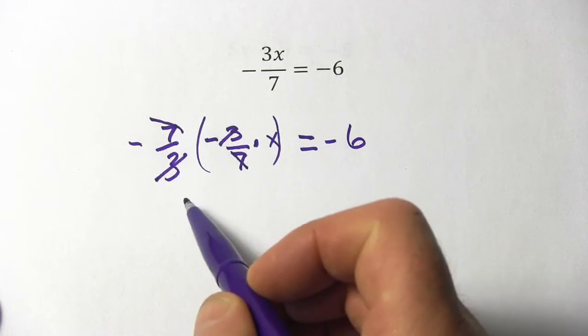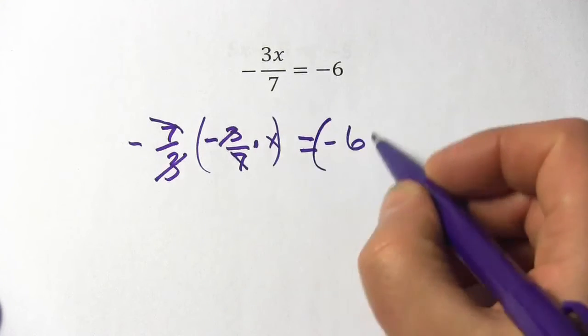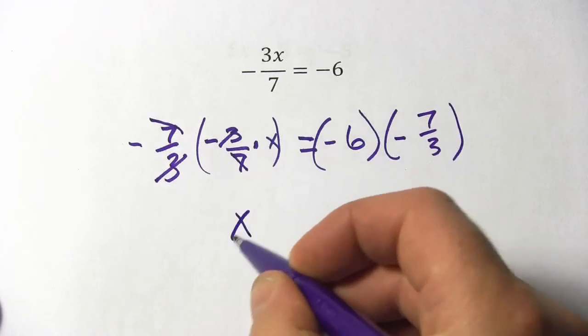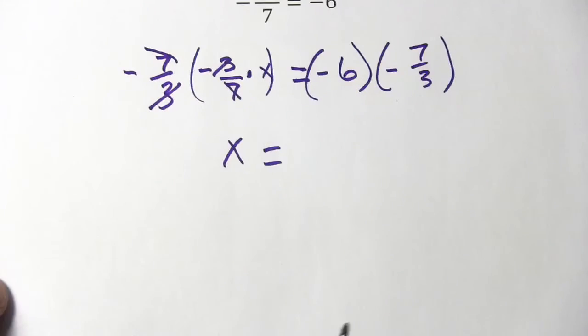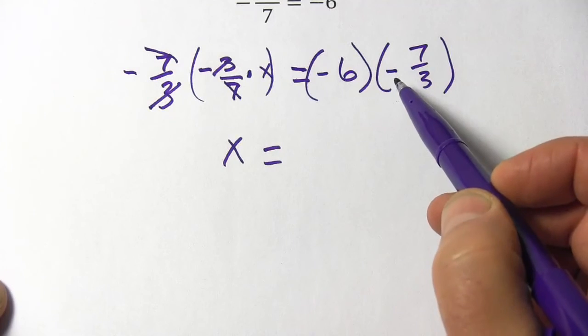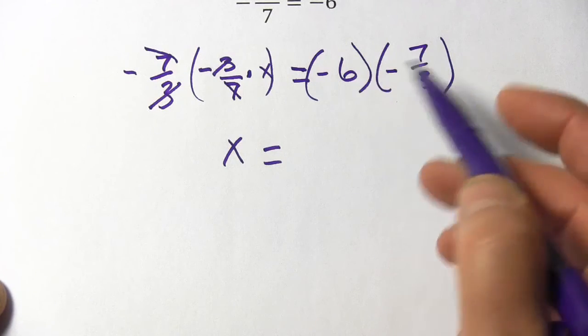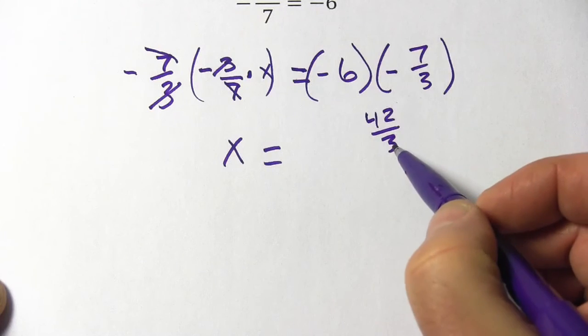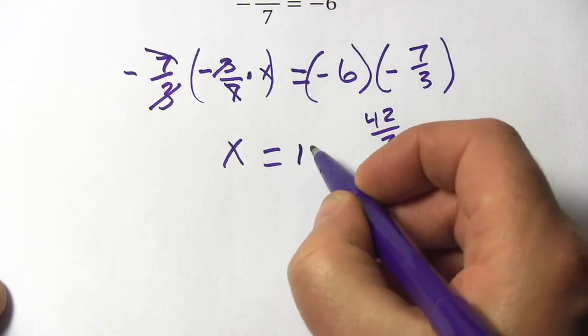Of course, I multiplied this side of the equation by negative 7 thirds. I need to do the same thing over here. So on this side we have x. On this side, a negative times a negative is a positive. 7 times 6 is 42, so we have 42 thirds, and 42 divided by 3, that's 14.